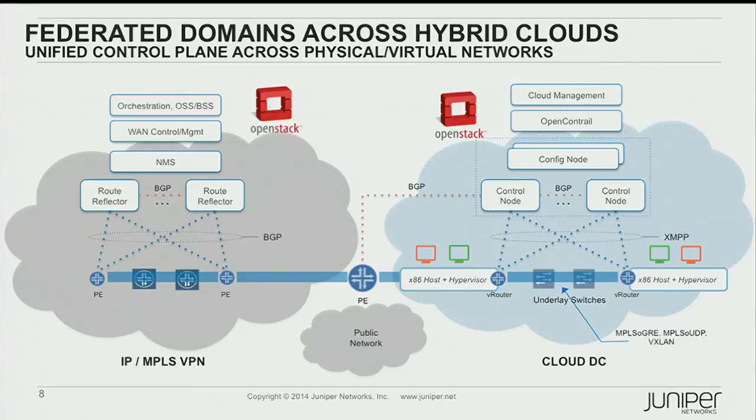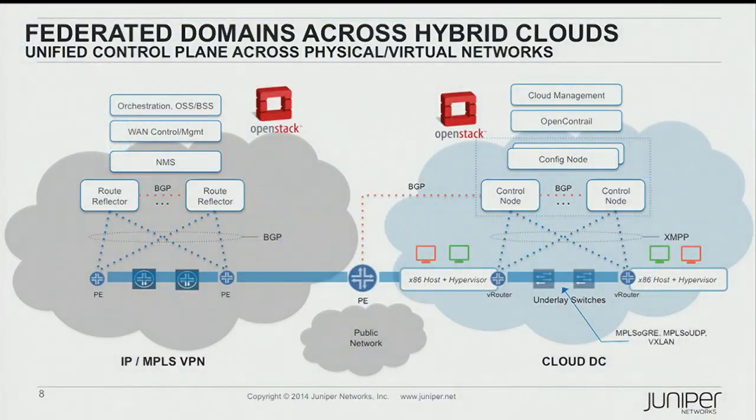From an encapsulation perspective, we started using GRE and UDP. We also support VXLAN, and we use VRF labels to identify virtual networks. We leverage that component of VRFs to have a 20-bit label that essentially quickly identifies virtual networks and respects policies at a higher level of abstraction.